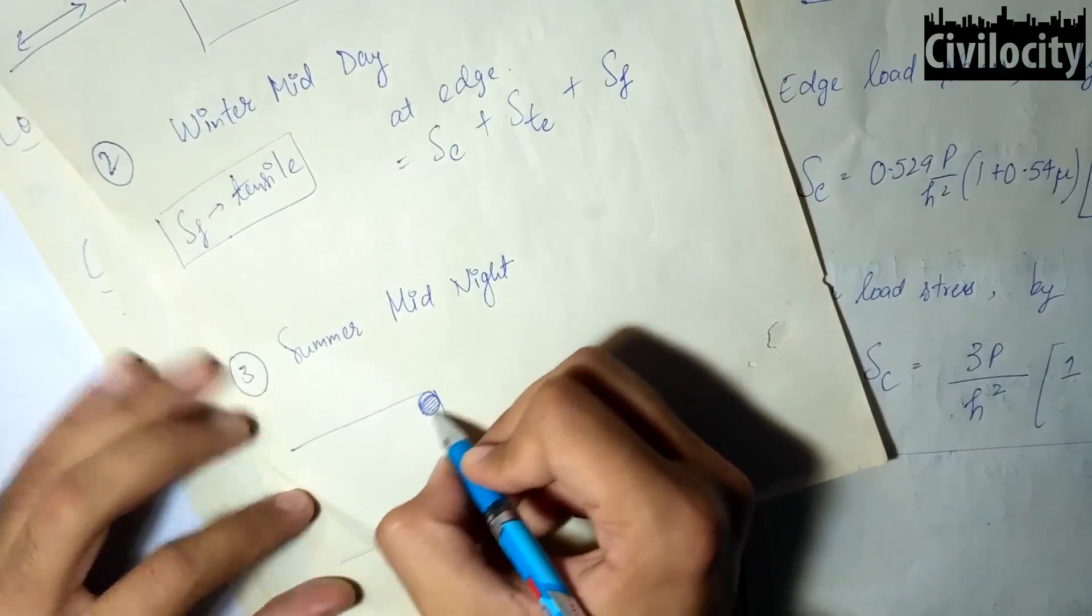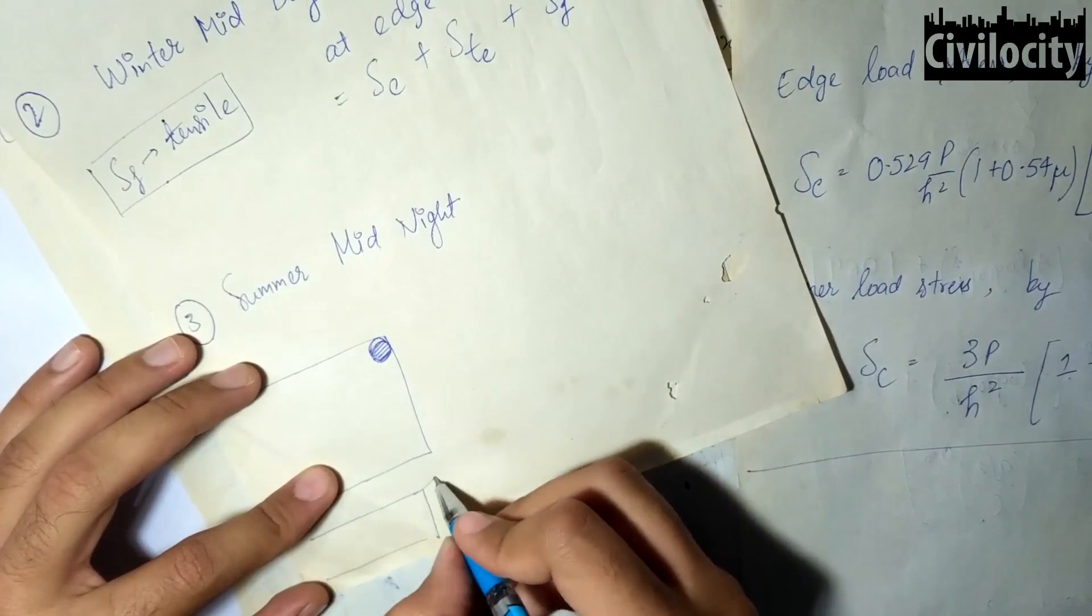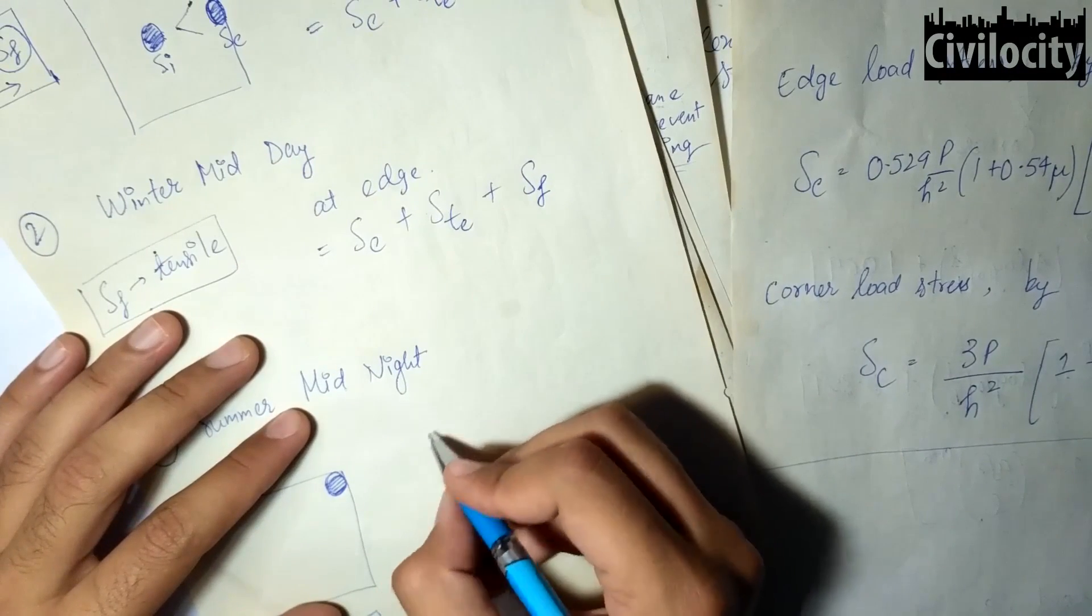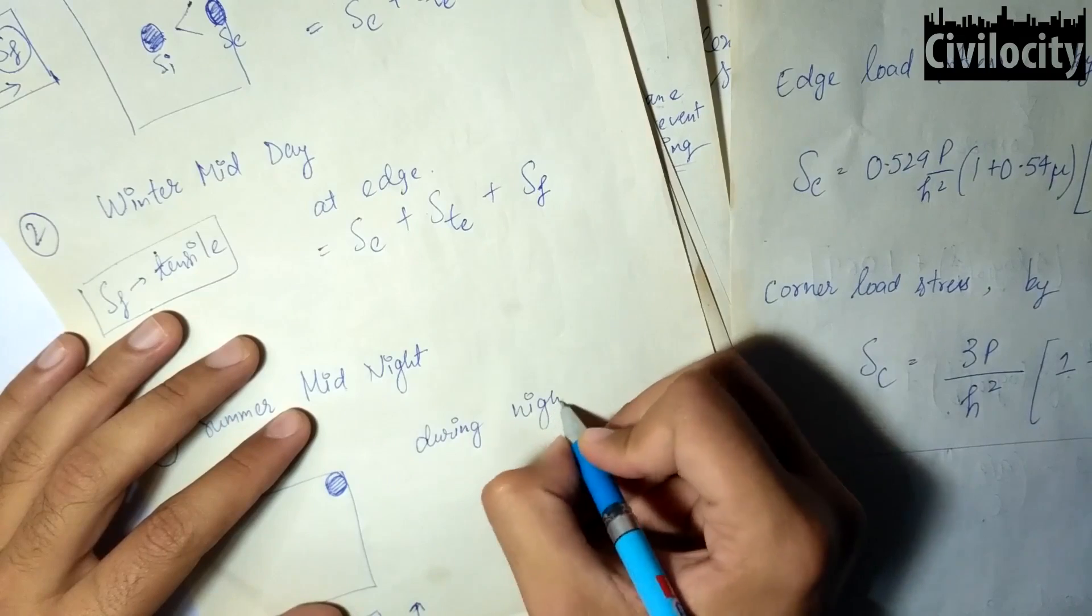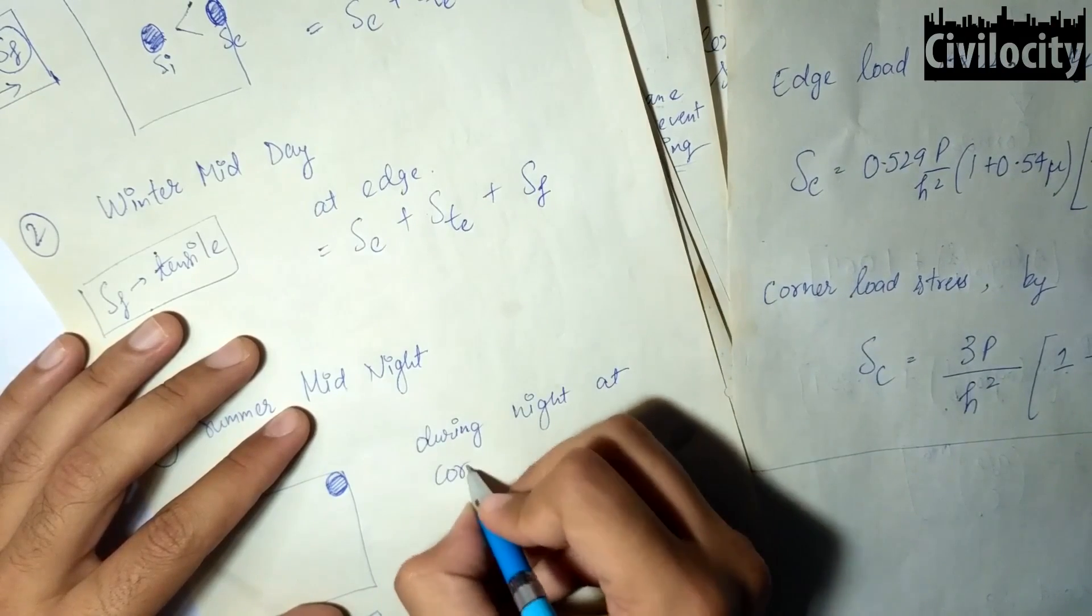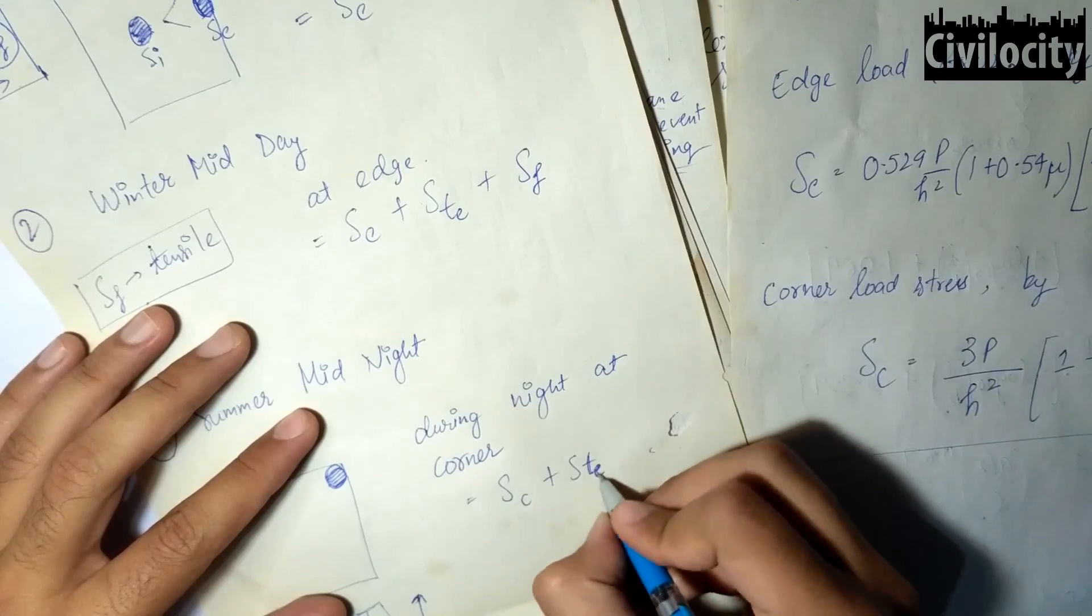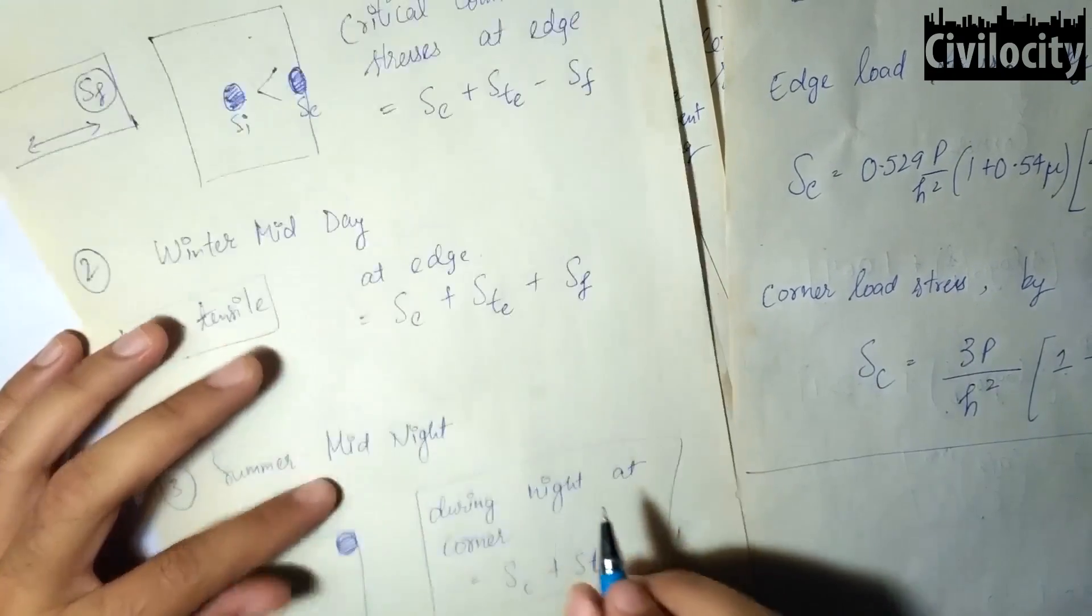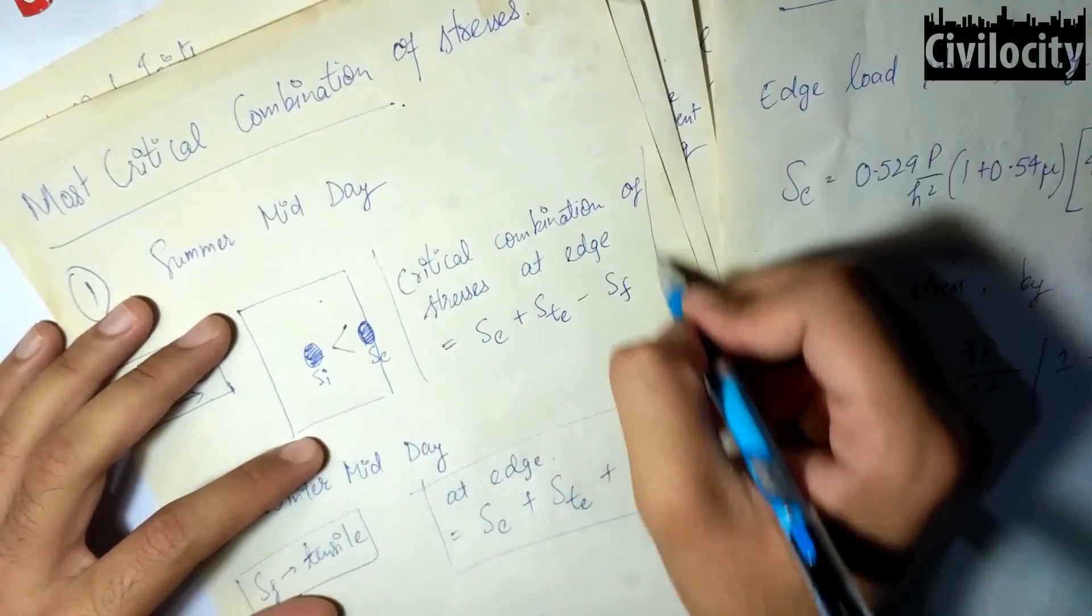During the summer midnight, the critical combination of stress occurs at the corner of the slab on the top when the slab tends to warp upwards and is resisted by the self weight. There is no frictional stress at the corner region. So this stress combination is given as SC plus STC, that is load stress plus warping stress. Generally, the summer midday is found to give the most critical combination of stresses.